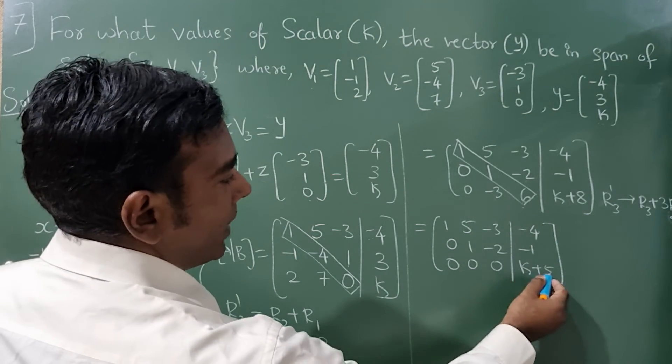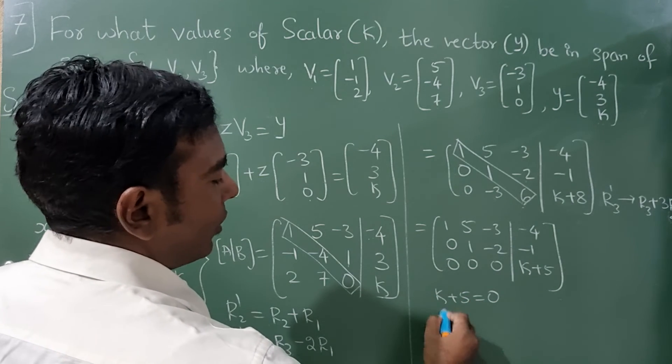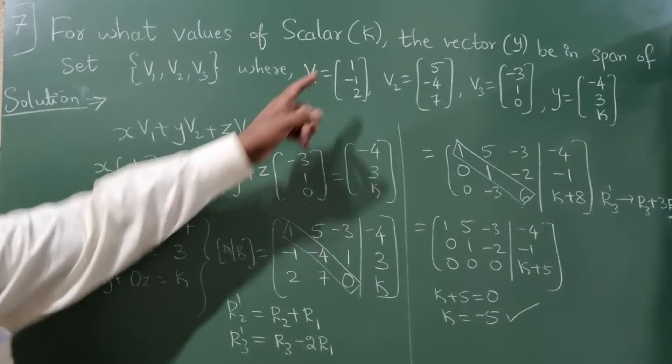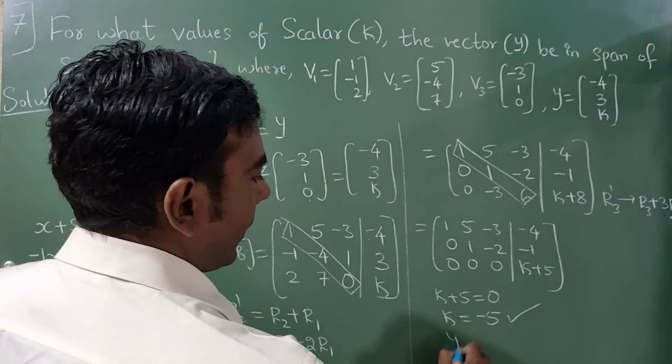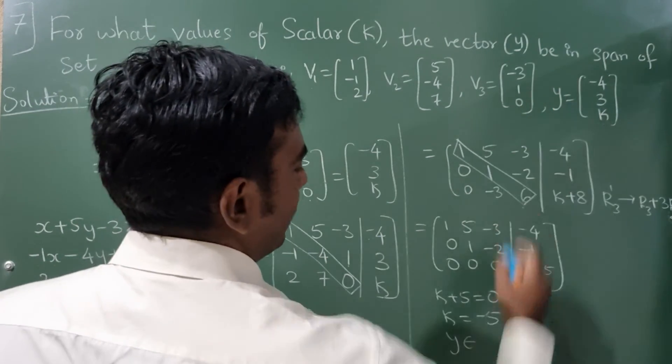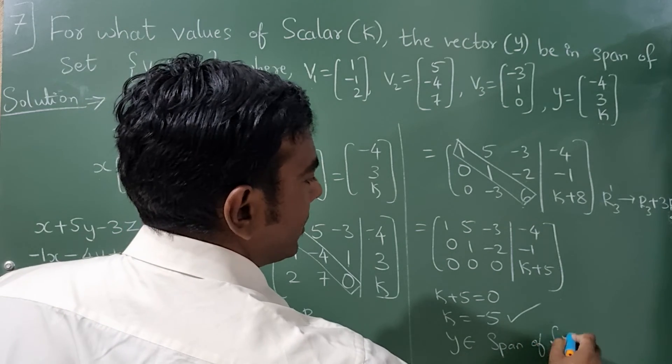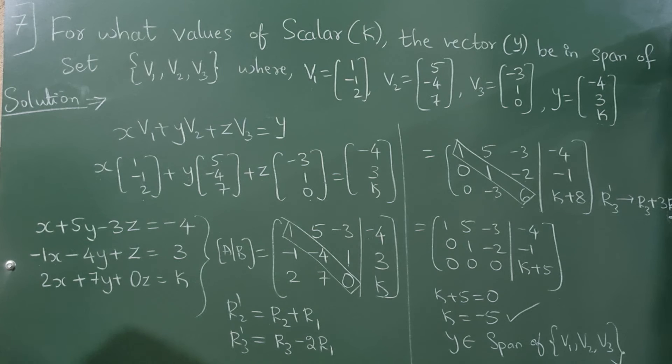You can see here k plus 5 is equal to 0, so k value will become minus 5. This is what we have to find. And you can also tell y belongs to span of vectors v1, v2, and v3. This completes your answer.